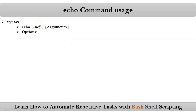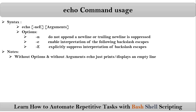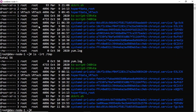The options for echo command are "-n", "-e". We will discuss one by one. Before going to use your echo command in your scripts or even in your command line, you have to remember some points. The very first one is: without options and without arguments, echo just prints or displays an empty line.